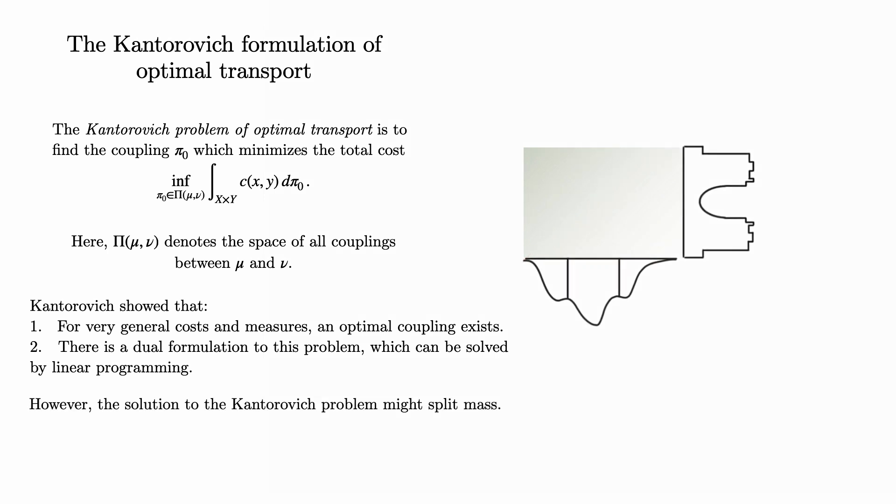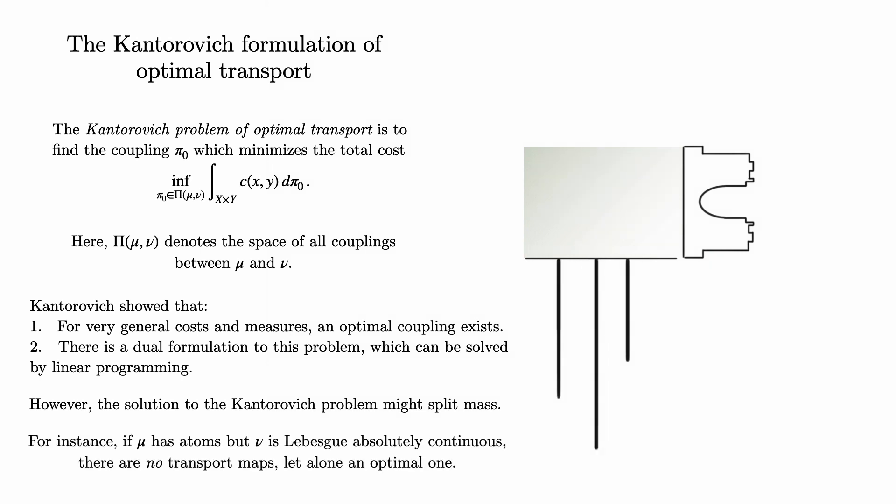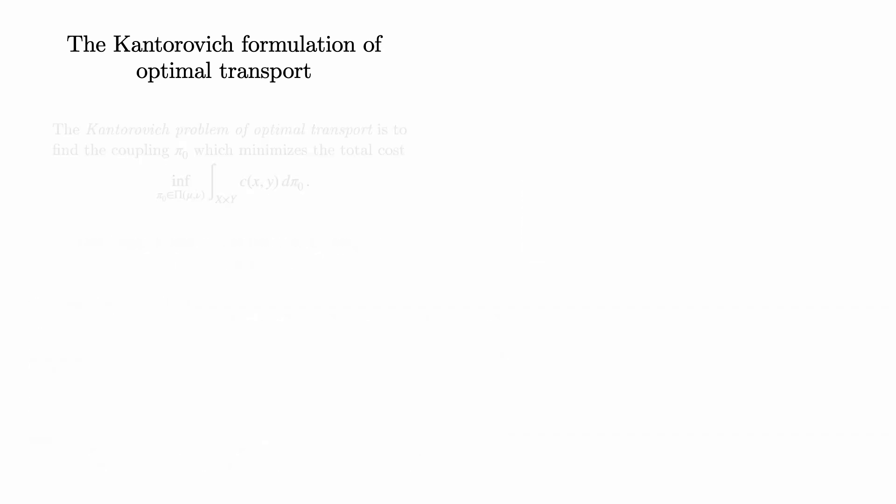However, in general, the solution to the Kantorovich problem may split mass, and so not solve the Monge problem. For instance, if μ has atoms but ν is Lebesgue absolutely continuous, there will be a solution to the Kantorovich problem, but there are no transport maps at all. As such, the existence question for the Monge problem remained open for a long time.